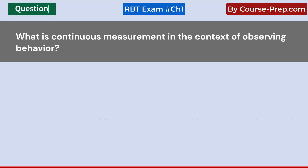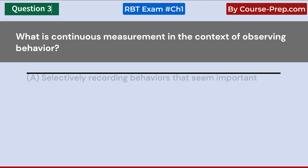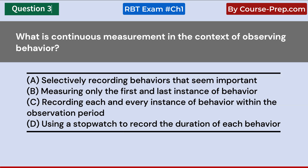What is continuous measurement in the context of observing behavior? A. Selectively recording behaviors that seem important. B. Measuring only the first and last instance of behavior. C. Recording each and every instance of behavior within the observation period. D. Using a stopwatch to record the duration of each behavior. Answer C: Recording each and every instance of behavior within the observation period.